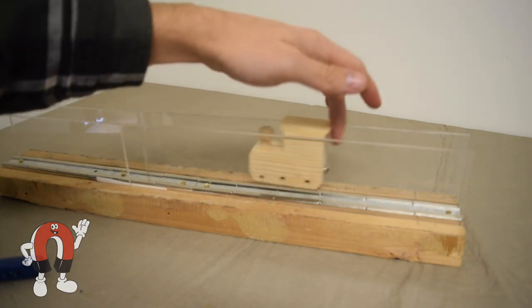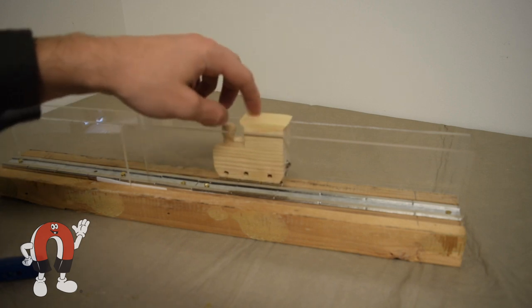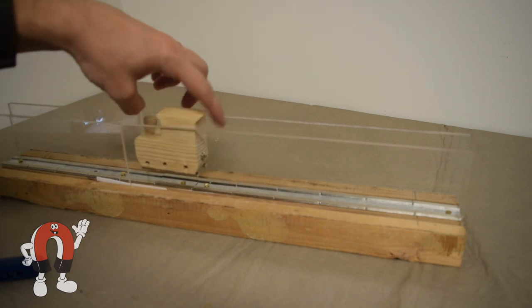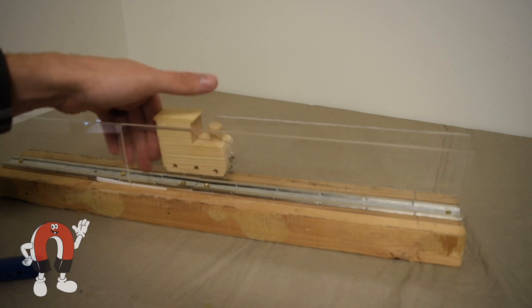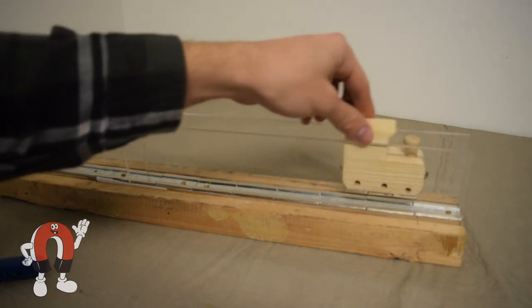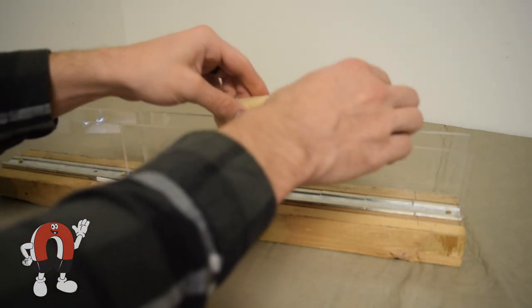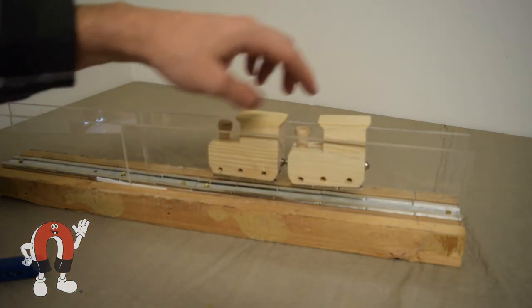One thing to remember is that levitation with magnets is not stable. They don't want to stay repelling and will do whatever they can to not repel. There needs to be something that keeps them in place. This is the reason for the plexiglass sides. The sides keep the trains stable. Without these, the trains would either flip over and attract to the magnets or they would just fall off the track.